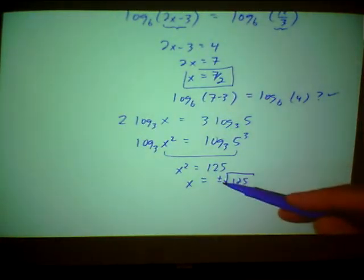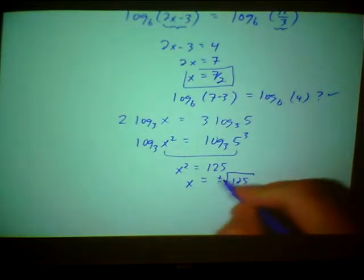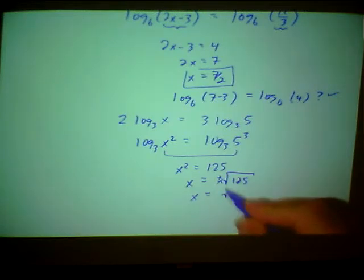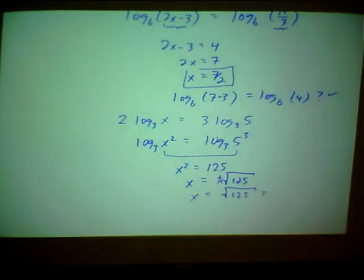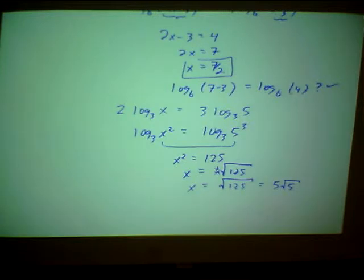However, I notice that if I use the negative and put it in my original equation, I end up trying to take the log of a negative, which I can't have. So it can't be negative. So actually, the solution is square root of 125, which I need to simplify, into 5 square root of 5. Is that right? 25 times 5. Yeah, 5 square root of 5. So there is how you solve that kind of problem.